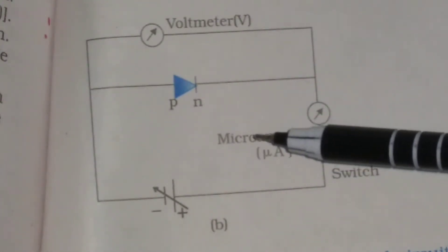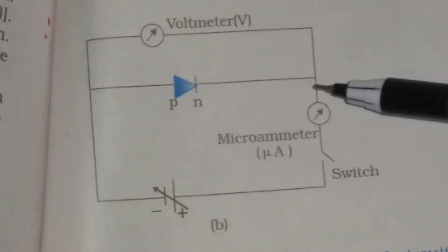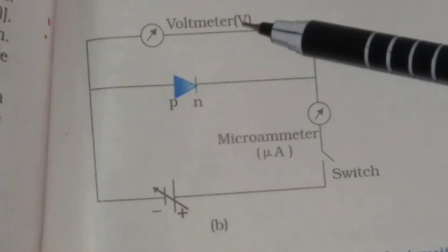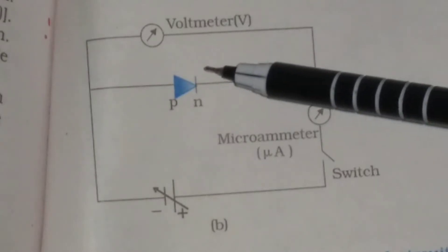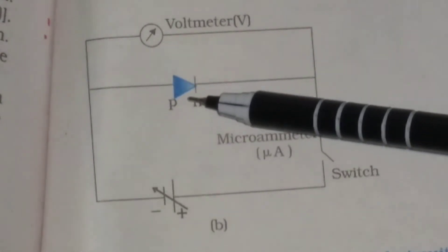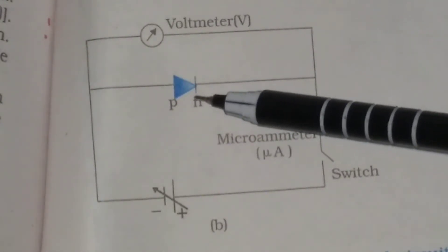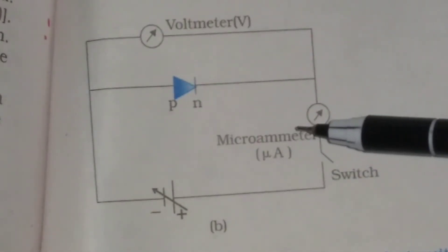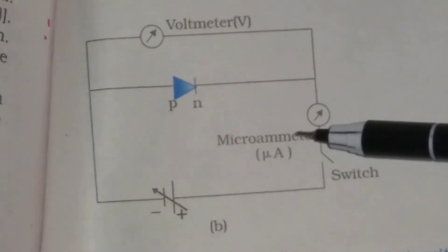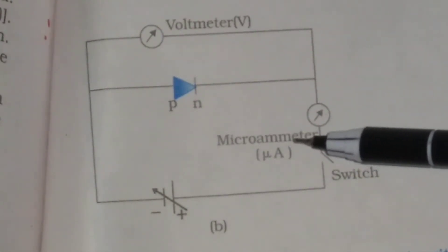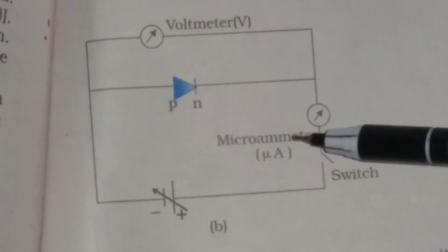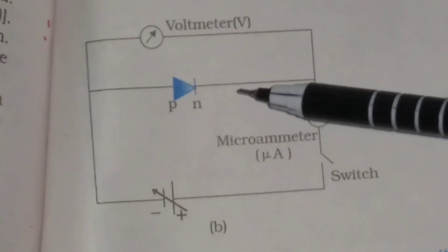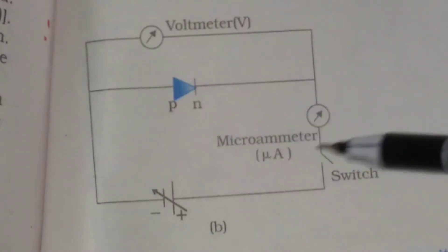That is why a microammeter is connected in series to the circuit and a voltmeter is connected in parallel to the P-N junction. The variation of voltage and current is plotted, and the graph so obtained is called the VI characteristics of a P-N junction when it is reverse biased.